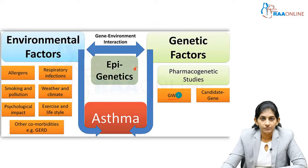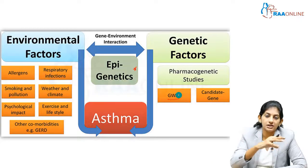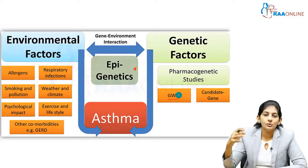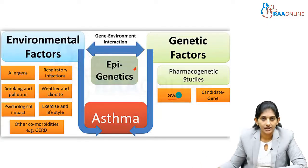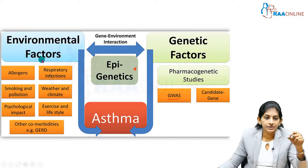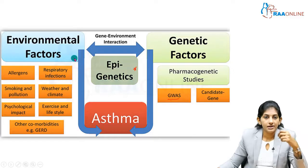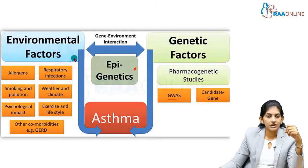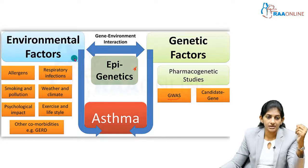Coming to the environmental factor: a genetically predisposed individual, when placed in a susceptible environment filled with allergens — the entire environment is filled with allergens. We will deal with allergens a little later. Recurrent respiratory infections, especially in children less than 5 years of age, predispose them to a lot of respiratory viruses.